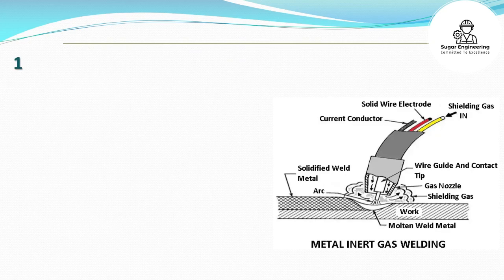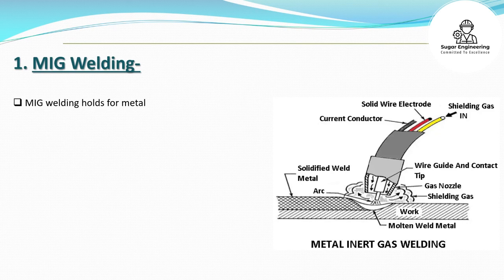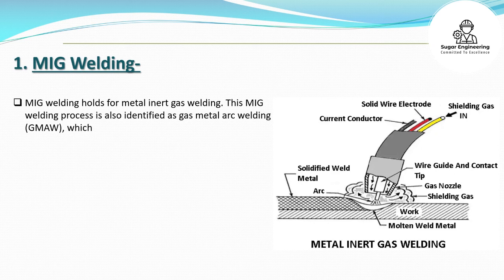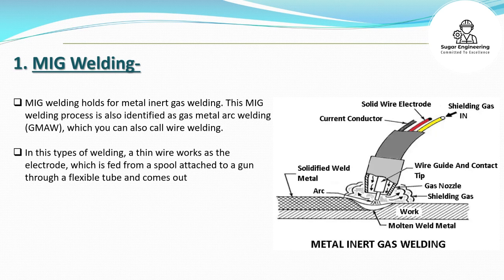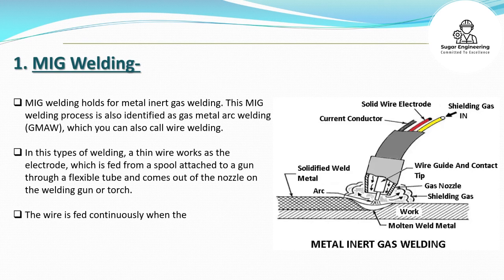1. MIG Welding. MIG stands for metal inert gas welding. This process is also identified as gas metal arc welding (GMAW), which you can also call wire welding. In this type of welding, a thin wire works as the electrode, which is fed from a spool attached to a gun through a flexible tube and comes out of the nozzle on the welding gun or torch. The wire is fed continuously when the trigger is pulled on the welding gun.